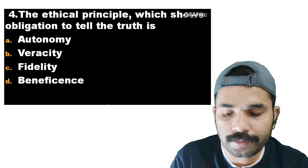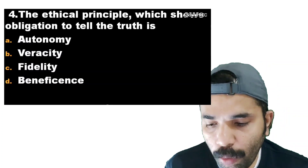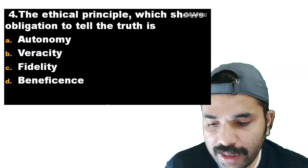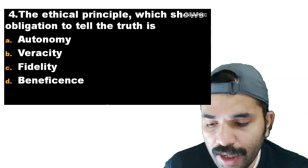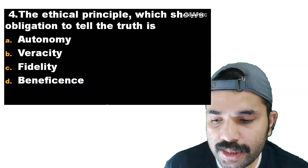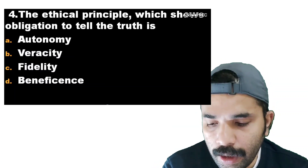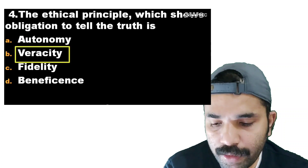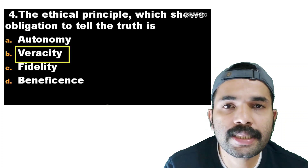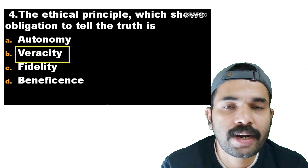Next question: the ethical principle which shows obligation to tell the truth is autonomy, veracity, fidelity, or beneficence. The correct answer is veracity. Veracity is the ethical principle that means obligation to tell the truth.